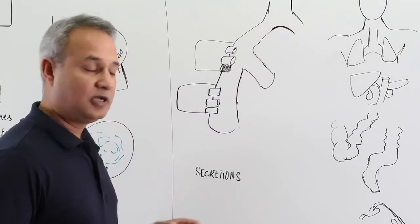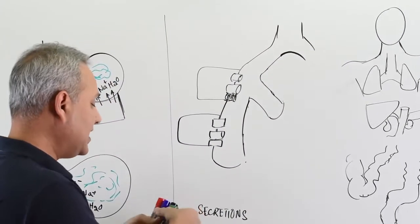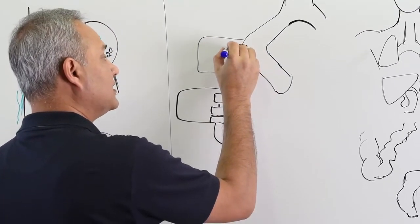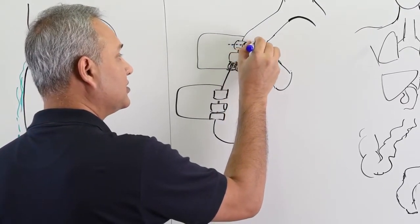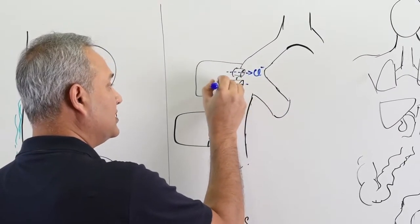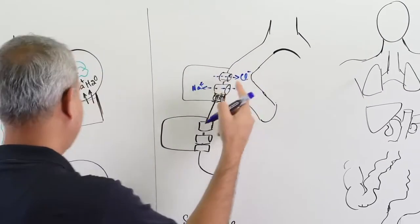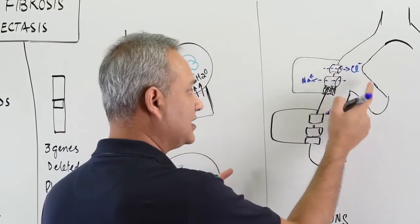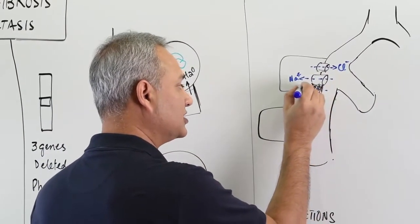In the rest of the secretions, what happens is that we have chloride that is secreted. Sodium is reabsorbed. Look, this is different from here. Here, chloride was reabsorbed, sodium was reabsorbed. Here, chloride is secreted. Sodium is reabsorbed and water is reabsorbed.